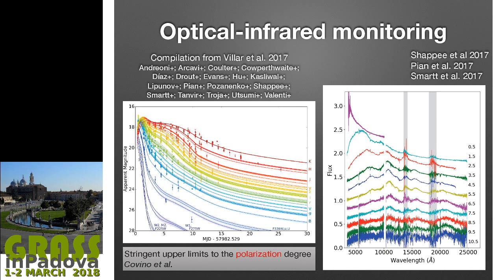This is a one-slide summary of what was done in the optical and near-infrared: light curves from many groups, polarimetry measurements showing only upper limits, and a sequence of spectra from first detection. All others were made at ESO, following the continuum until the object disappeared after a couple of weeks.